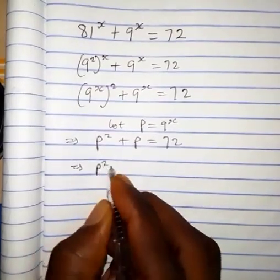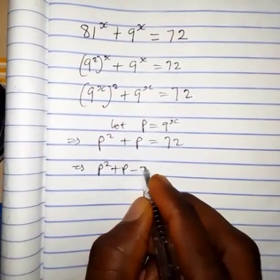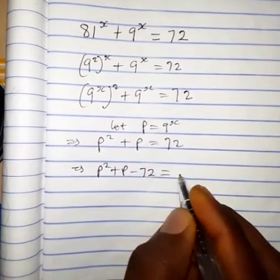This also implies that p squared plus p, when we bring 72 to the left side, becomes p squared plus p minus 72, which equals 0.